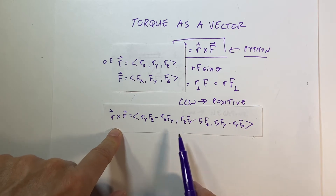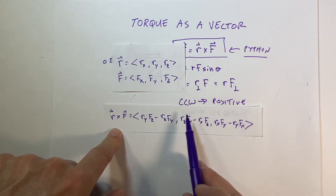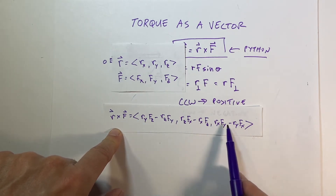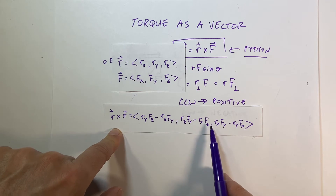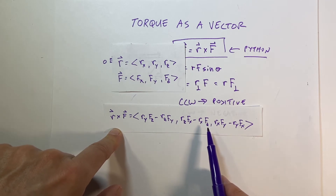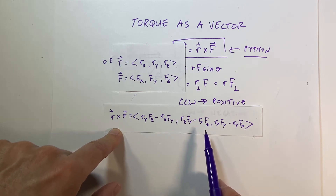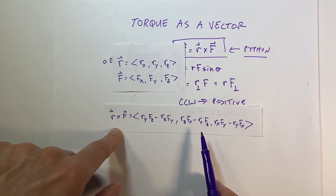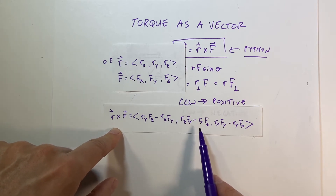This is important because the cross product gives us a vector answer, which shows that torque is indeed a vector. You'll also find this comes up when finding magnetic fields — the magnetic field also depends on the cross product.